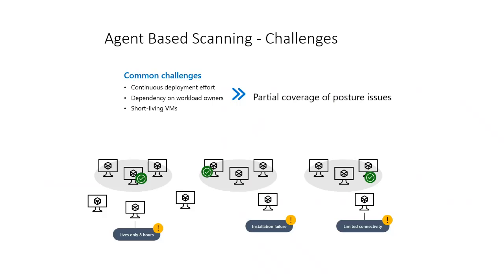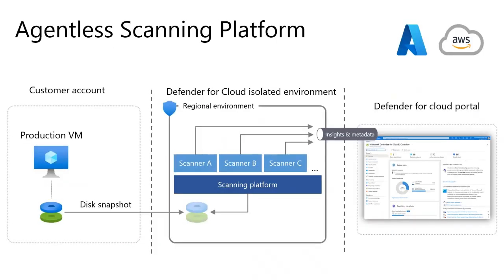With agentless scanning for VMs, you can get frictionless and instant visibility on security posture without installing any agents. Defender for Cloud takes a snapshot of VM disks and copies it into an isolated scanning environment. Each VM is scanned once a day. The necessary metadata is acquired from the disk and then sent to the Microsoft engines.